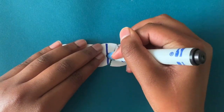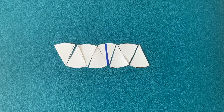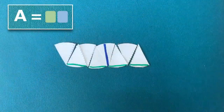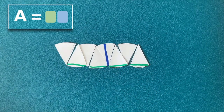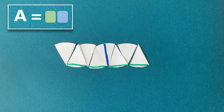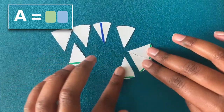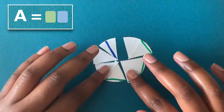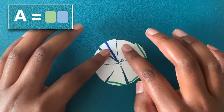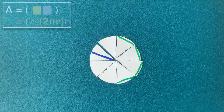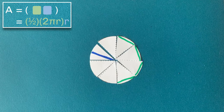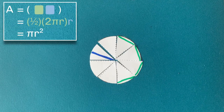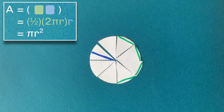Once again, using colored markers, draw in the height and the base of the parallelogram. I'm using blue for the height and green for the base. So the area of our circle is just the area of our parallelogram, which is the green times the blue. Now rearrange the pieces into a circle so we can understand what the green and the blue mean — keep the parts with the green edges together and the plain edges together. Now we can see that the green is half the circumference of the circle, which is 2πr, and the blue is the radius. When we plug these values in and simplify, we see that the area of a circle is πr².